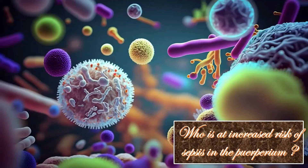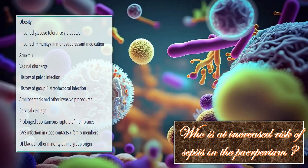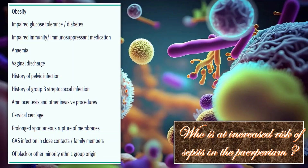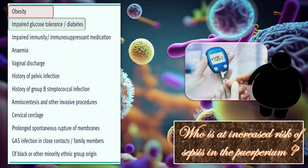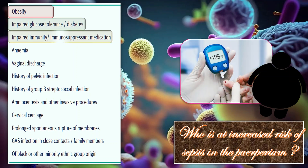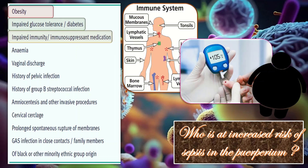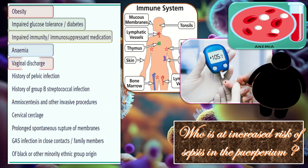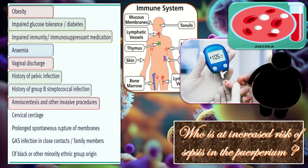The first point in this guideline is: who is at increased risk of sepsis in the puerperium? We have different risk factors, which include obesity, impaired glucose tolerance or diabetes, impaired immunity or immunosuppressant medications, anemia, vaginal discharge, history of pelvic infection, history of group B streptococcal infection, amniocentesis, and other invasive procedures.